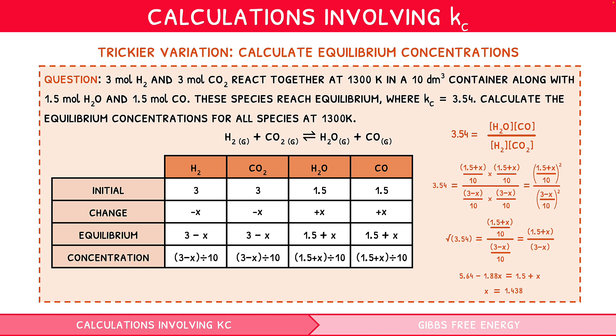Now that we have a value for X, the change in the molar quantity, we can substitute this back into our expressions to find the equilibrium concentrations of each species. So, 3 minus X over 10, 3 minus X over 10, 1.5 plus X over 10, and 1.5 plus X over 10. These would give 0.156, 0.156, 0.294, and 0.294 moles per decimetre cubed.